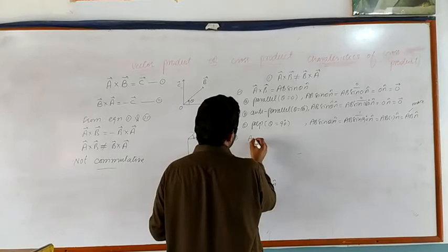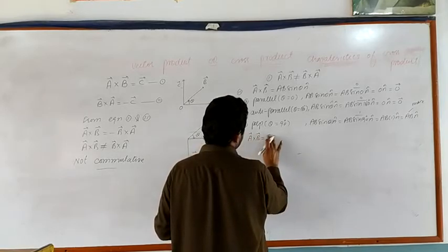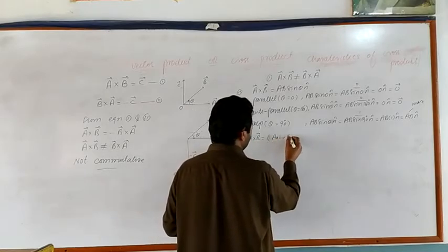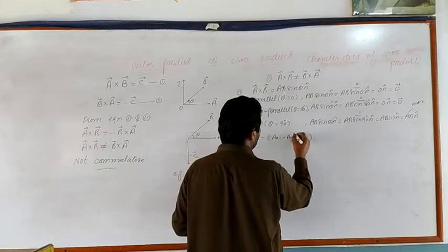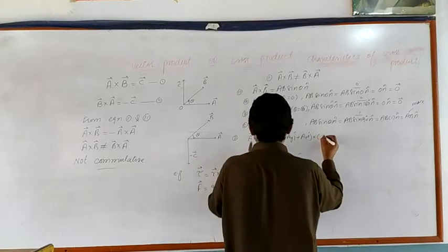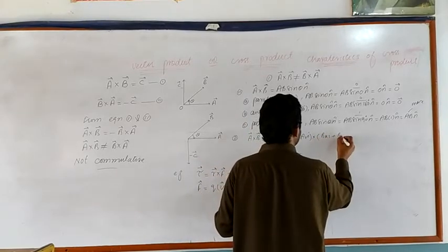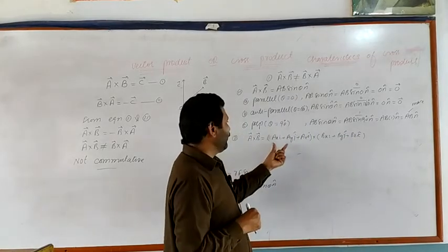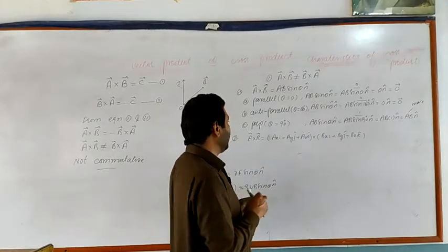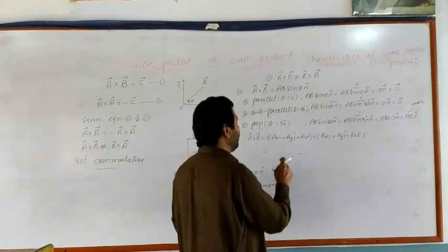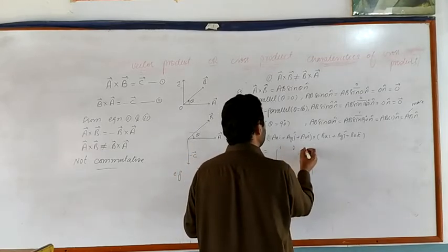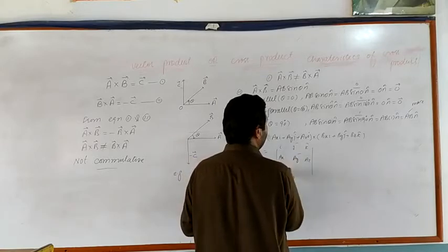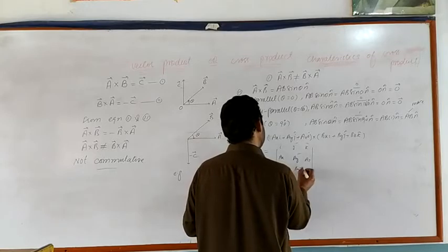Suppose vector A and vector B are multiplied in their component form. Vector A has three rectangular components: Ax î, Ay ĵ, Az k̂. Vector B also has three rectangular components: Bx î, By ĵ, Bz k̂. Their cross product is found by the determinant method: a 3×3 determinant with first row î, ĵ, k̂; second row Ax, Ay, Az; third row Bx, By, Bz. Opening the determinant gives: î(Ay Bz − By Az) − ĵ(...) + k̂(Ax By − Bx Ay).